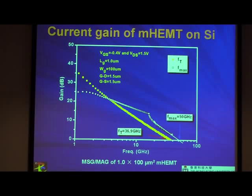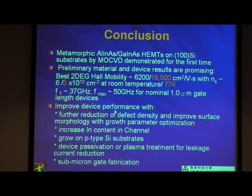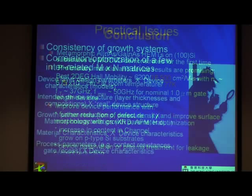To conclude: we were able to grow metamorphic InP-based HEMTs on silicon (100) — the first to demonstrate both DC and RF results. The best Hall mobility is around 13,000. Device performance doesn't always increase linearly with Hall mobility. We still need to further reduce dislocation density, increase the indium content in the channel for higher mobility, start growing on P-type silicon, do device passivation to improve gate leakage, and make sub-micron gate devices.